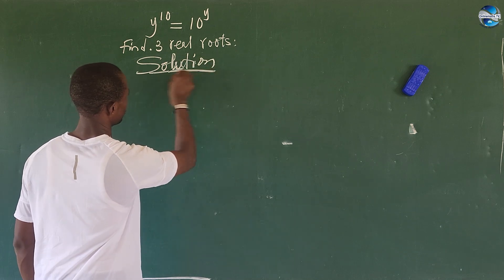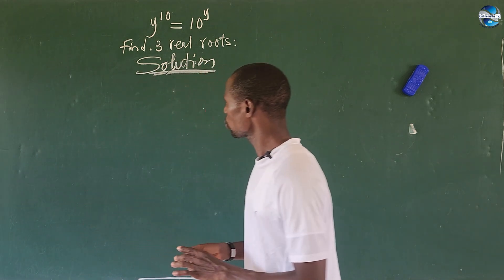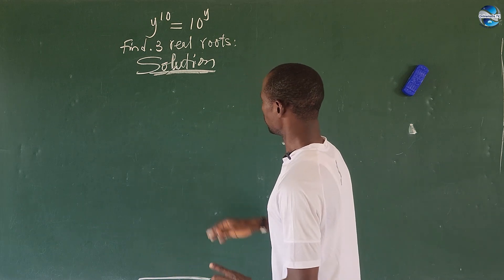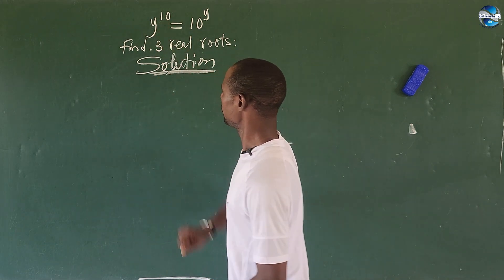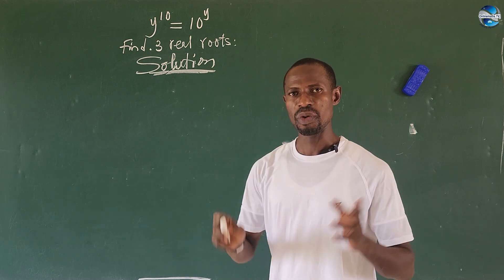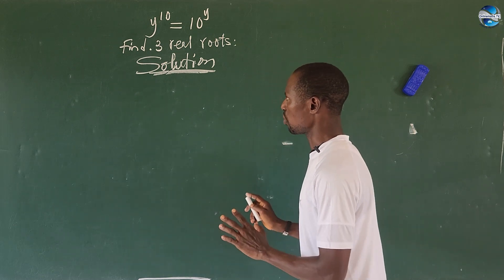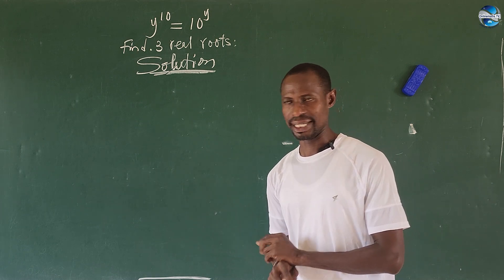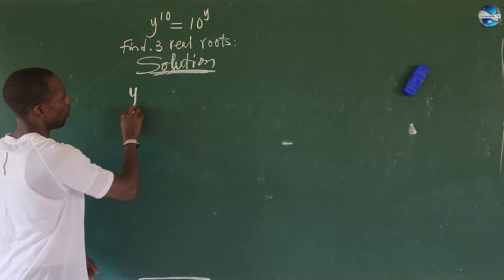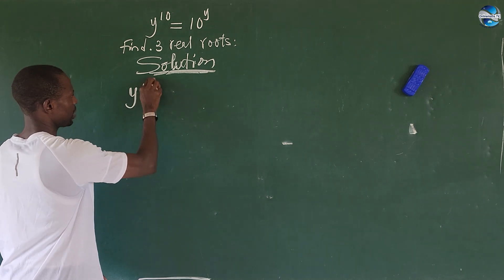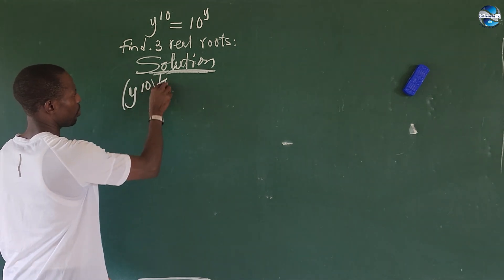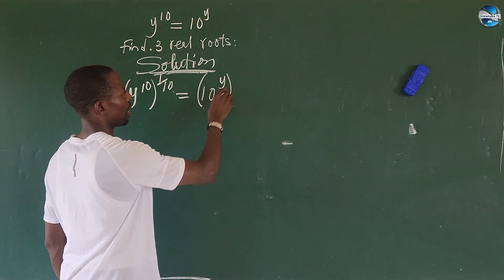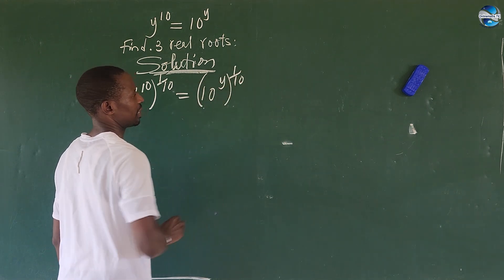So taking our solution here, we want to make y the subject of the formula first. In other words, let's remove the power of 10 by multiplying the exponent on both sides by one over 10. Doing that gives us: (y^10)^(1/10) = (10^y)^(1/10), which simplifies to y = 10^(y/10).